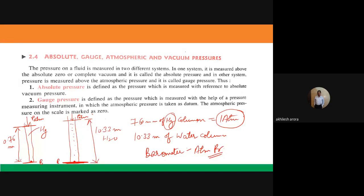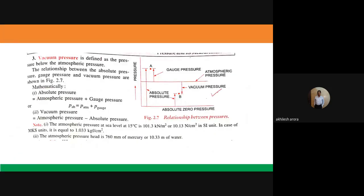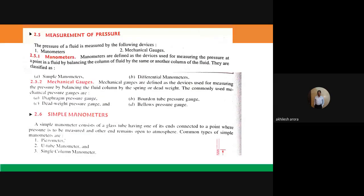Summary of pressure types: Absolute pressure = atmospheric pressure + gauge pressure. Vacuum pressure = atmospheric pressure − absolute pressure. Standard atmospheric pressure is 760 mm of mercury or 10.33 m of water column. Pressure measurement devices include manometers and mechanical gauges.